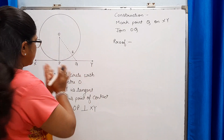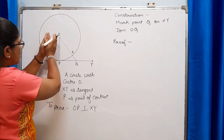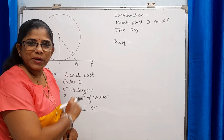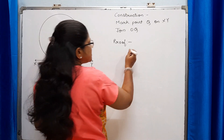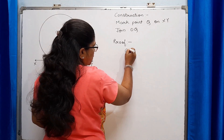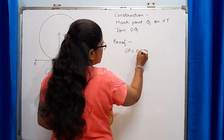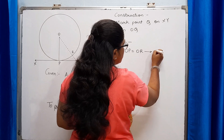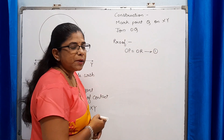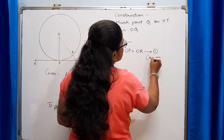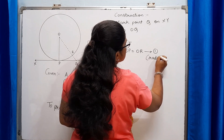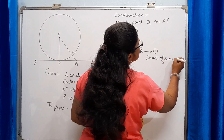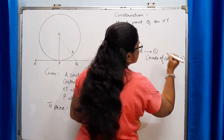Now let's start with the proof. OP is a radius, and OR is also a radius because R is a point on the circumference. So OP equals OR — we will mark this as statement one. The reason is that they are radii of the same circle.